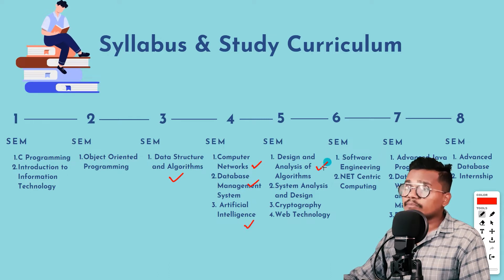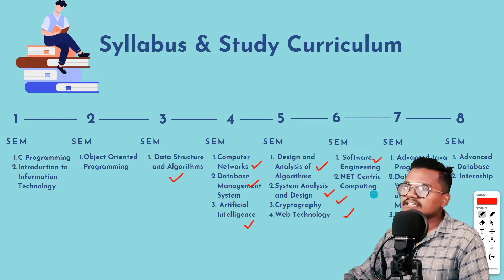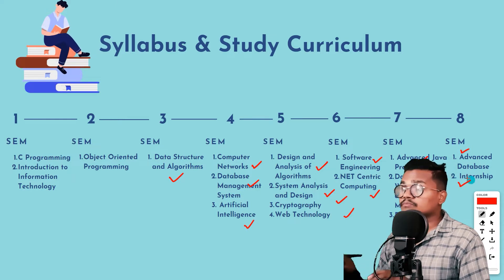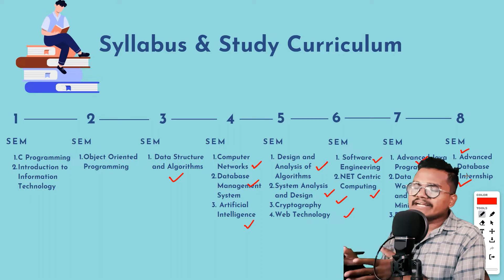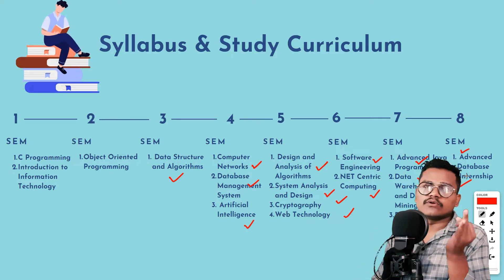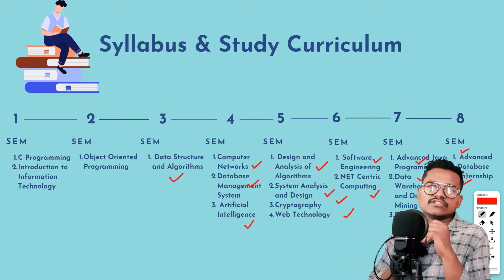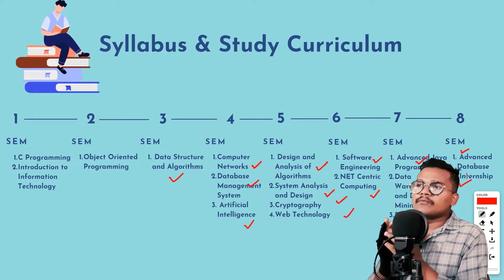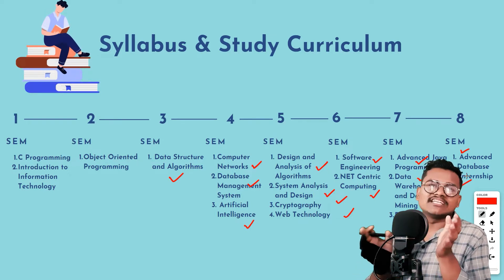In the fifth semester, there is design analysis of algorithms, system analysis and design, cryptography, and web technology. In the sixth semester, there is software engineering and net-centric computing. In the seventh semester, there is advanced Java programming, data warehousing and data mining, and project work. In the eighth semester, there is advanced databases and intensive programming. Besides these, there are also physics, math, compiler design, microprocessor, and Theory of Computation (TOC).